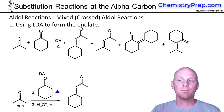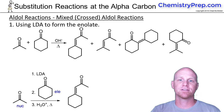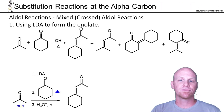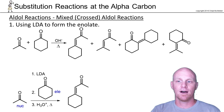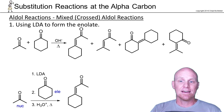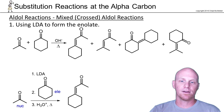Now we need to talk about what are called mixed or crossed aldol reactions. The idea is that your nucleophile and your electrophile come from two different ketones or aldehydes, instead of both coming from the same one as we saw in the self-aldol. These can be a little bit problematic, and if you don't set them up properly you can get a mixture of products.